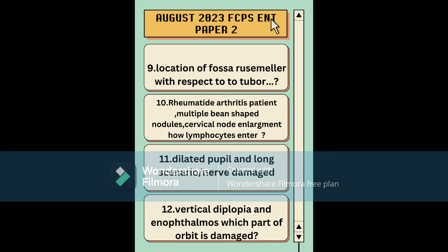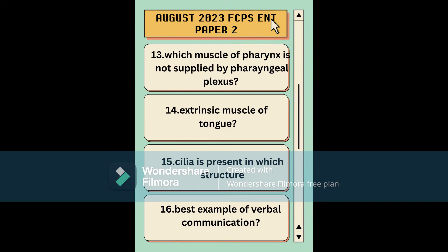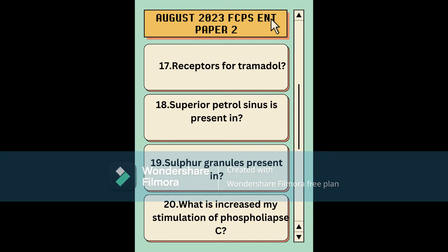Questions continued: which muscle of the pharynx is NOT supplied by the pharyngeal plexus; which extrinsic muscle of the tongue has cilia in its structure; the best example of verbal communication related to ethics; and receptors for tramadol — morphine receptors were listed as options, related to pharmacology. Then: where is the superior petrosal sinus present, and where are sulfur granules present.